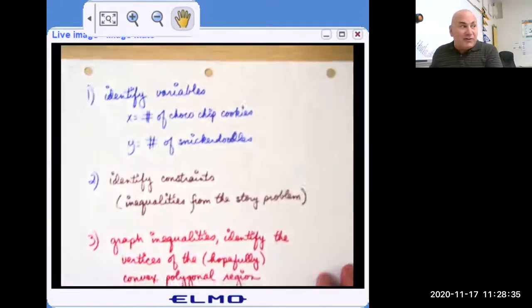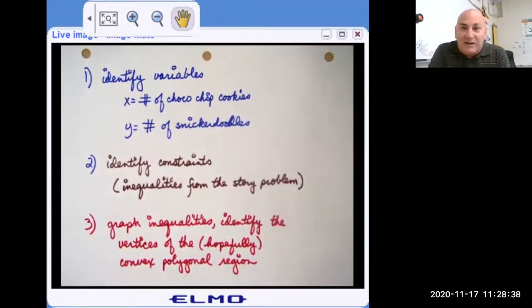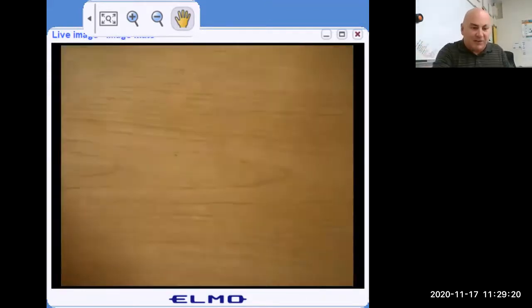So first thing we would have to do in this example is identify our variables. In the example I gave you, X could be the number of chocolate chip cookies, and Y would be the number of snickerdoodles that we're going to make. Then we have to identify our constraints from the word problem. In the word problem I gave you, there would be some preparation time per cookie, and then there is some cooking time per cookie or per batch. Then we want to graph all those inequalities, find out where the vertices are, where that convex polygonal region is where all solutions in that region are feasible.